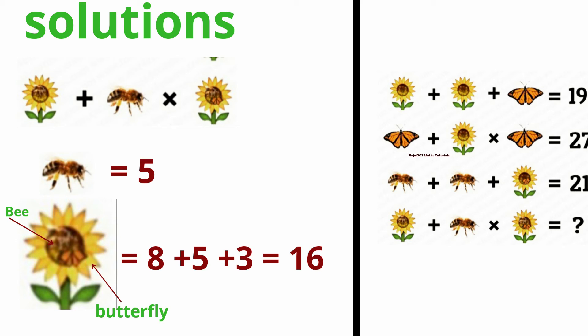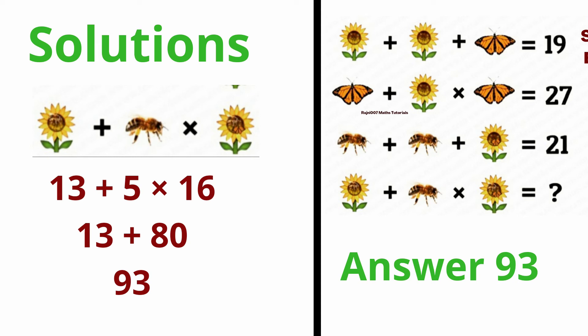Value we have put, so you can see final solution we have got: 13 plus 5 times 16, 13 plus 80, final solve 93. This puzzle's final solution we have got, 93.